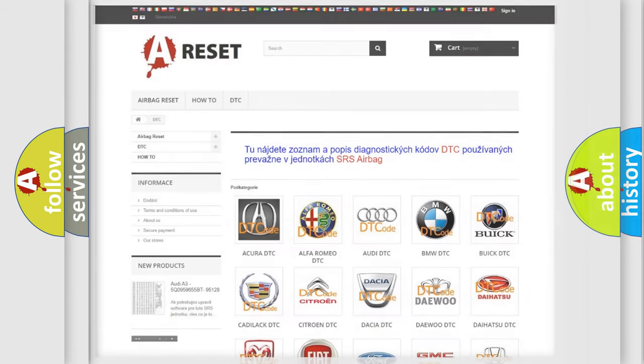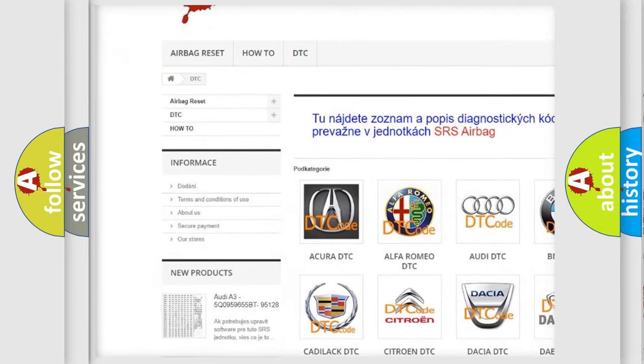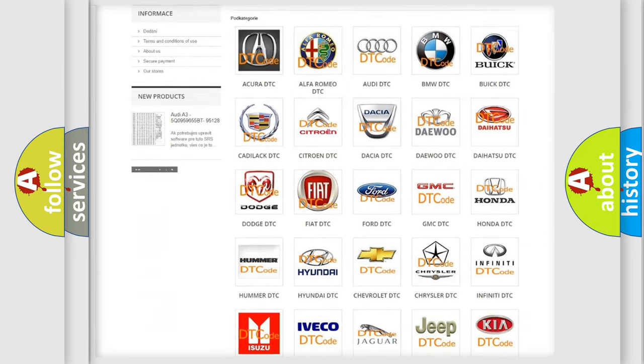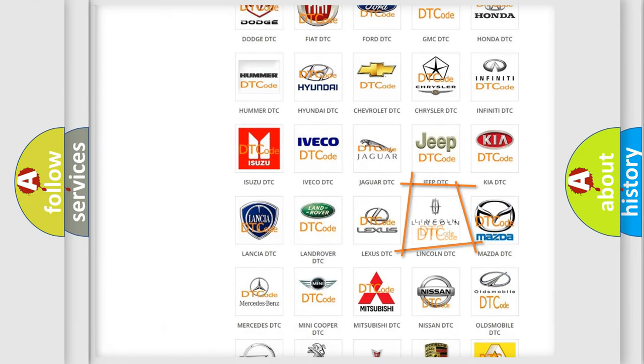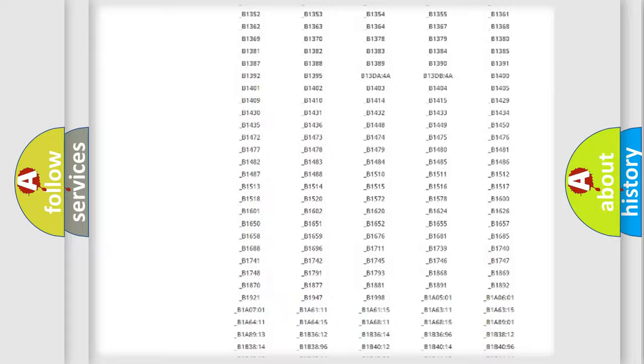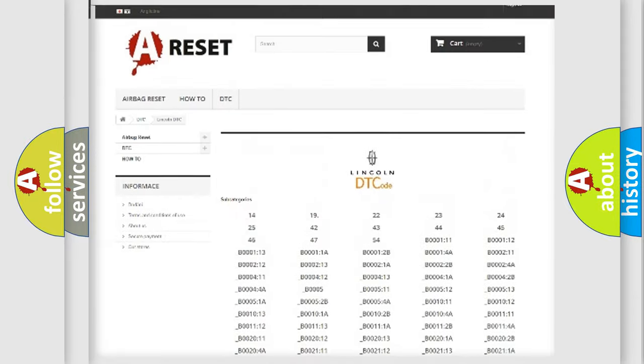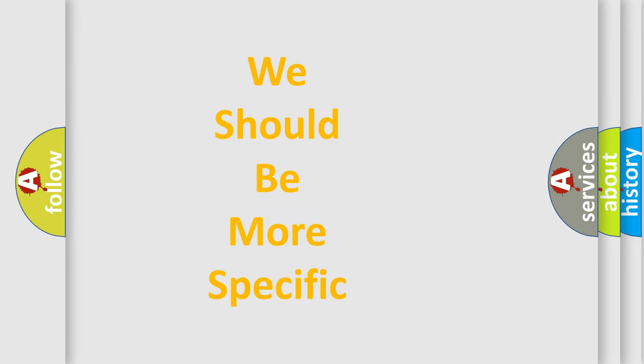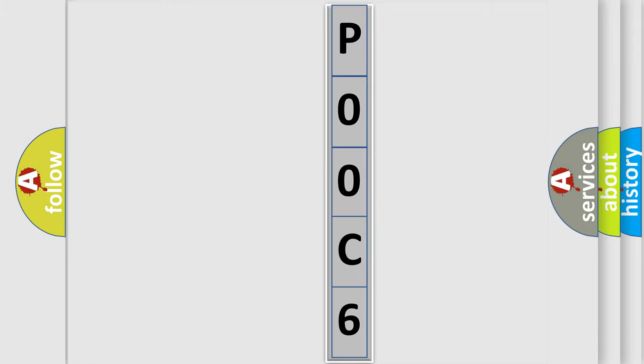Our website airbagreset.sk produces useful videos for you. You do not have to go through the OBD2 protocol anymore to know how to troubleshoot any car breakdown. You will find all the diagnostic codes that can be diagnosed in vehicles, and many other useful things. The following demonstration will help you look into the world of software for car control units.